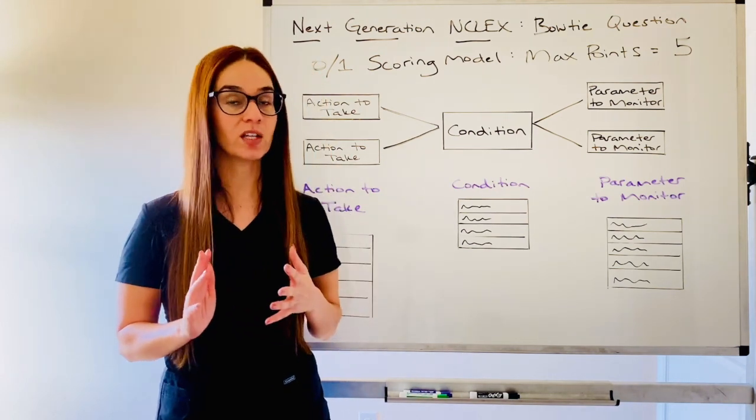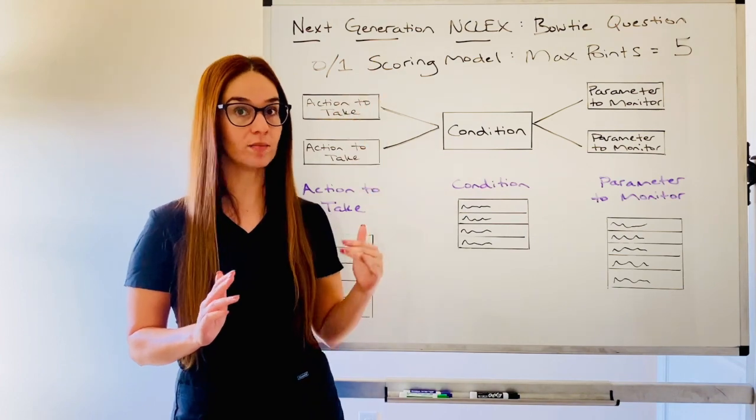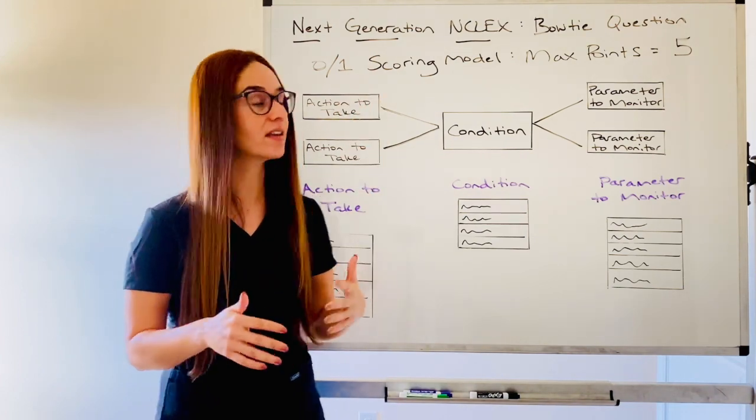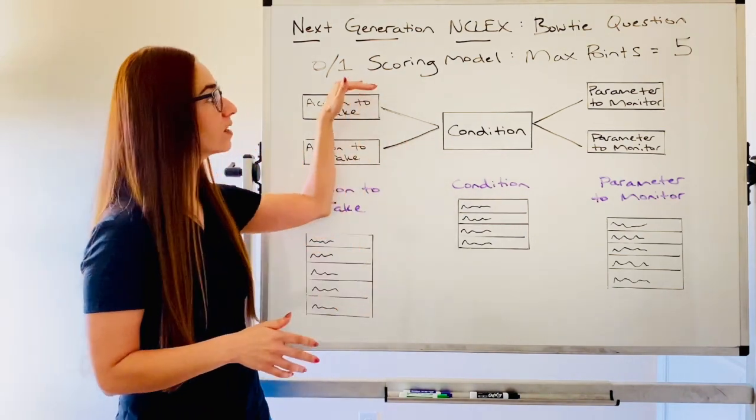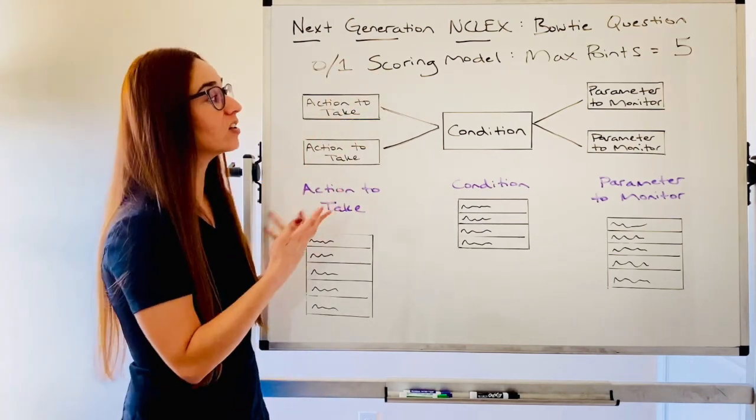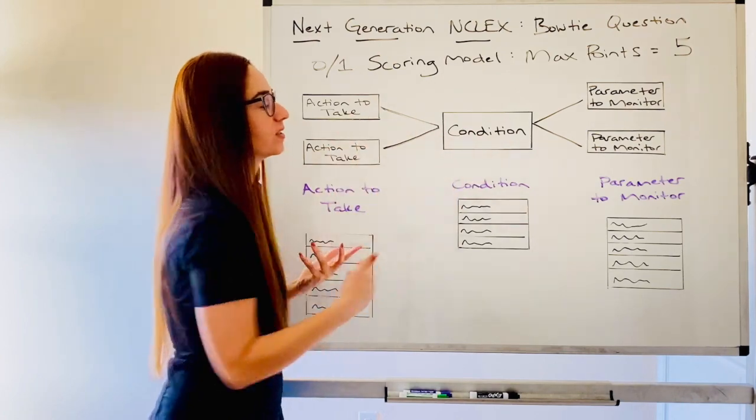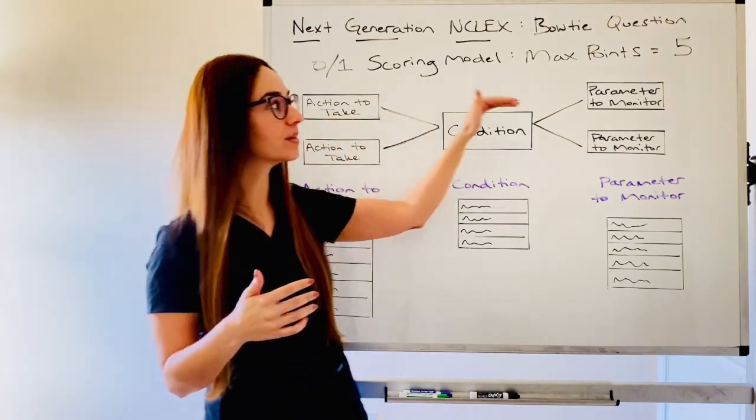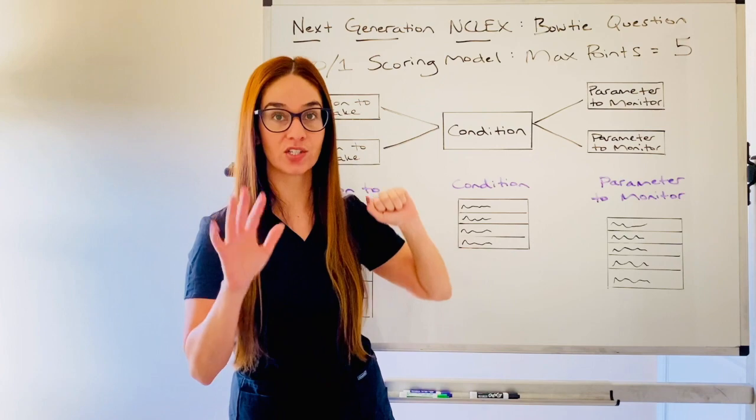So if you didn't see my previous video, you'll be able to see the three scoring models the Next Gen NCLEX uses, but bow tie questions specifically use this scoring model. First off, I think it looks like a bow tie, right? That's why it's called a bow tie. The maximum amount of points you can get for this question is five.